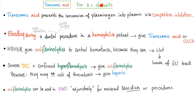For the sophisticated student: tranexamic acid prevents the conversion of plasminogen into plasmin by competitive inhibition. If you have a patient with hemophilia and there is a risk of bleeding during a dental procedure — tooth extraction or dental surgery — you can give tranexamic acid or aminocaproic acid.